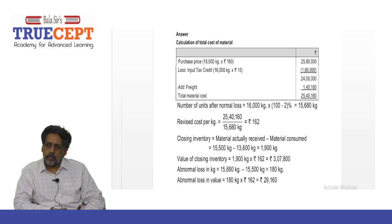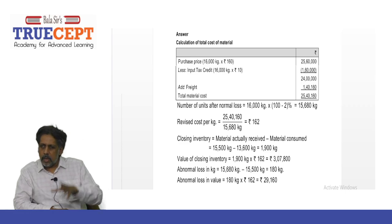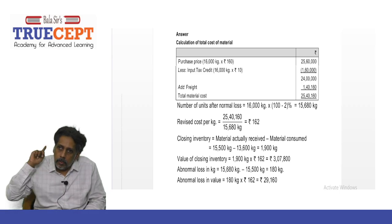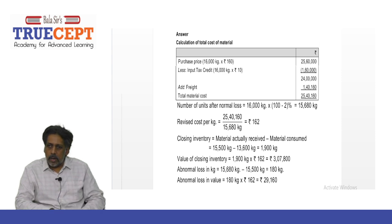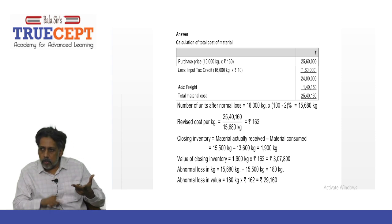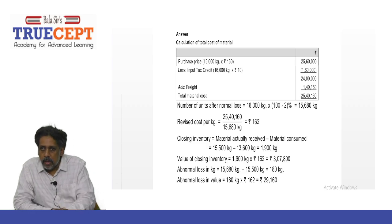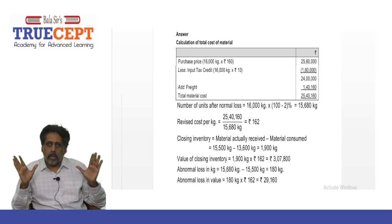Then add freight rupees 1,40,160, because that is a cost incurred for purchase of material. If you refer to Accounting Standard Number 2, paragraph 7 of the standard talks about this — purchase price should include all non-refundable taxes and any freight or carriage inwards and all acquisition-related costs. Total material cost is rupees 25,40,160.